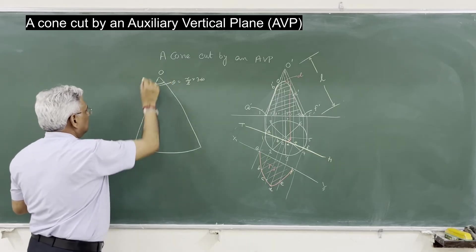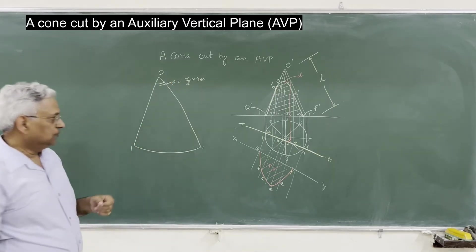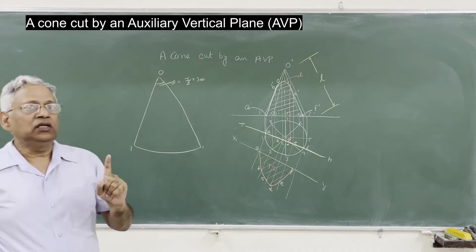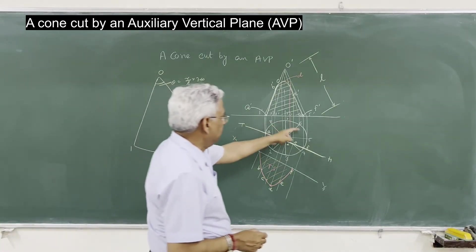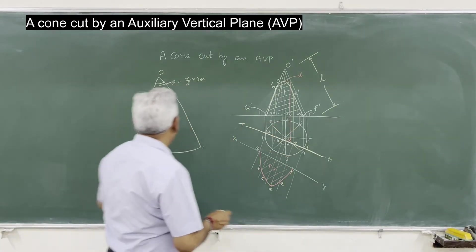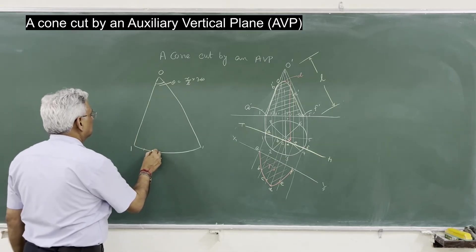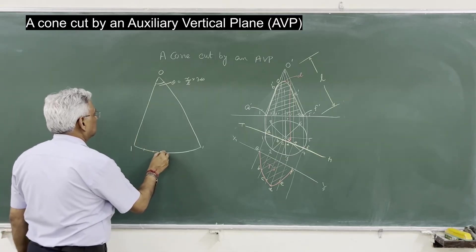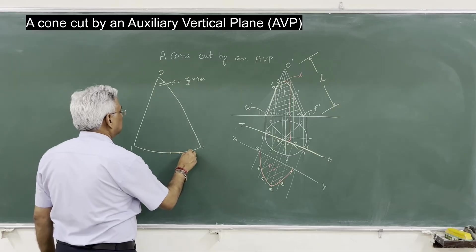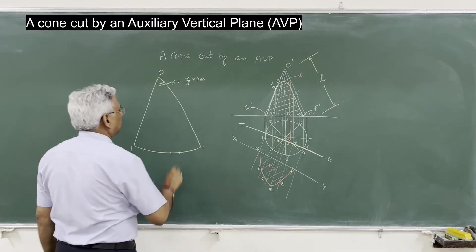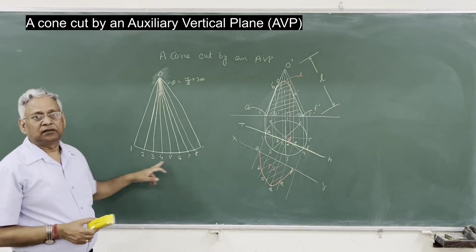This is O, and this is 1 and 1. Now divide this into 8 equal parts because you divided the base into 8 equal parts: 1, 2, 3, 4, 5, 6, 7, and 8. That is the complete development.